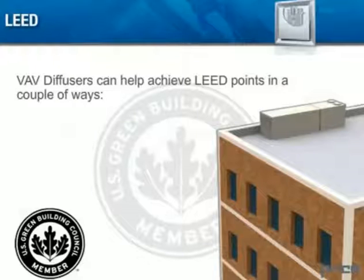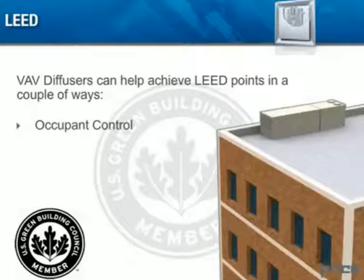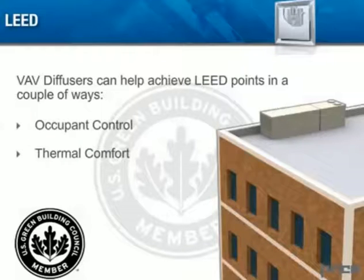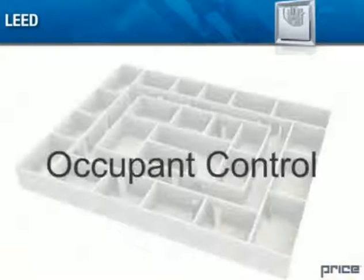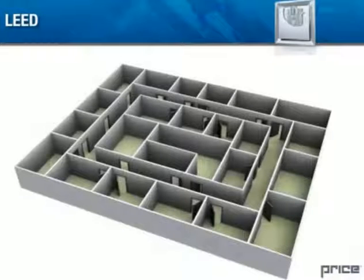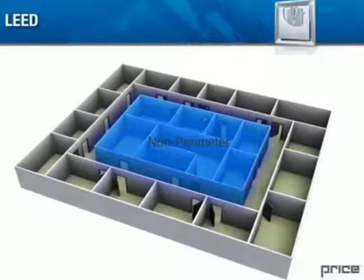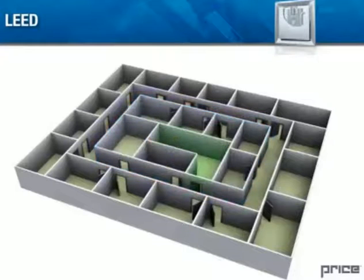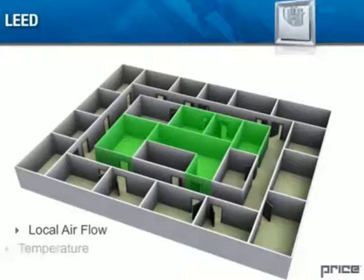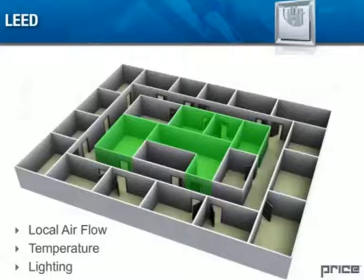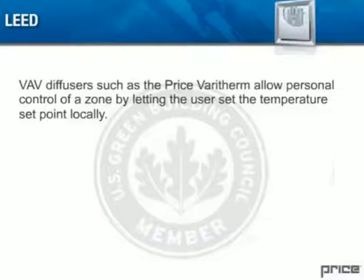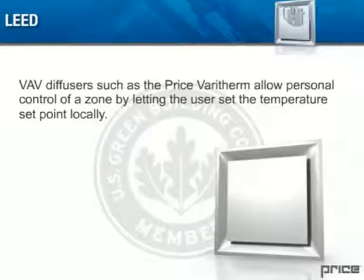VAV diffusers can help achieve LEED points in a couple of ways: occupant control and thermal comfort. For occupant control, in order to qualify for this credit, 50% of occupants in non-perimeter spaces must have individual control over the local airflow, temperature and lighting. VAV diffusers such as the Price VeriTherm allow personal control of a zone by letting the user set the temperature set point locally.